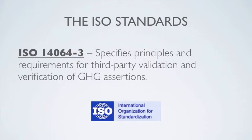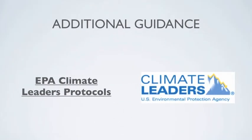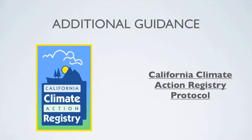Each of these standards can be purchased for just over $100 from the ISO website or other authorized vendors. While the ISO standards and the GHG Protocol are the most widely used resources in GHG accounting, there are many other helpful resources. The EPA has developed many protocols used by companies that report through Climate Leaders, an EPA-sponsored voluntary reporting program. Similarly, the California Climate Action Registry has also developed numerous protocols for its voluntary reporting program.